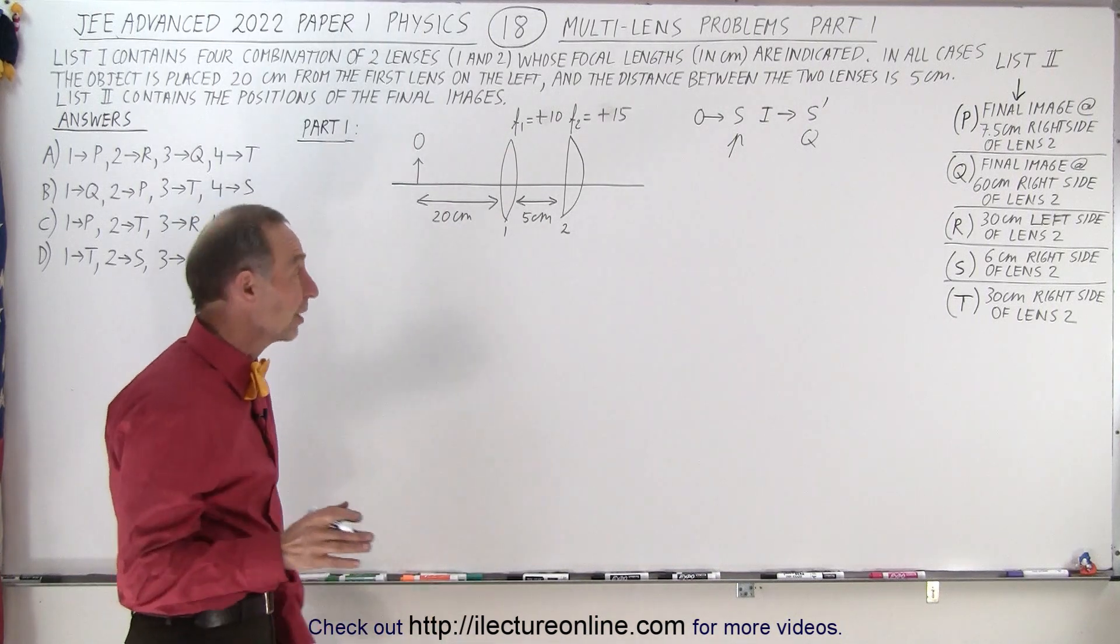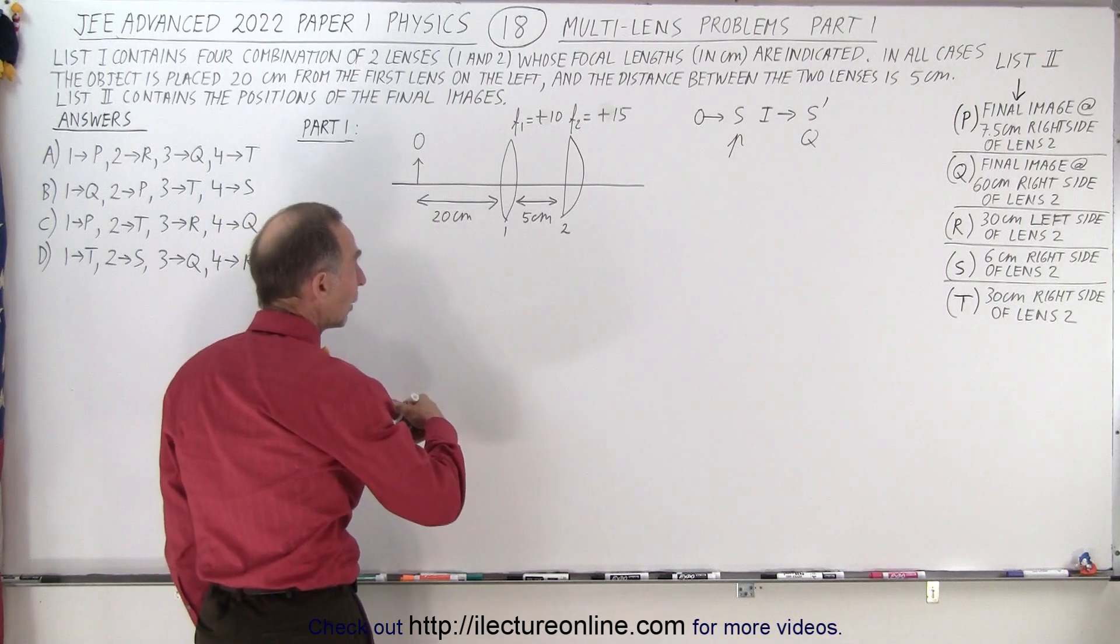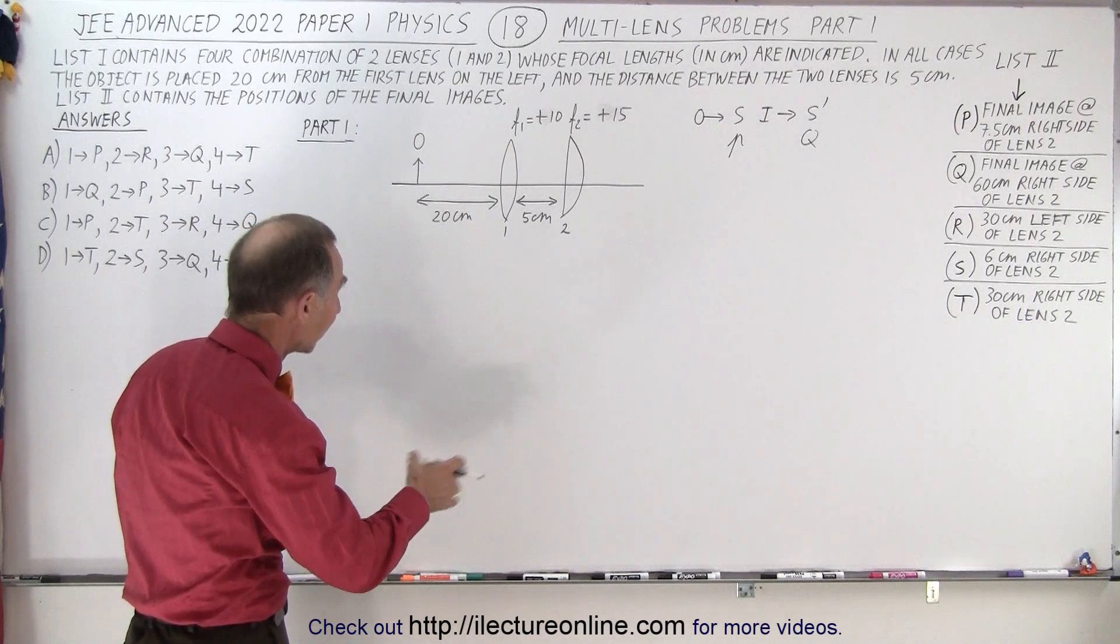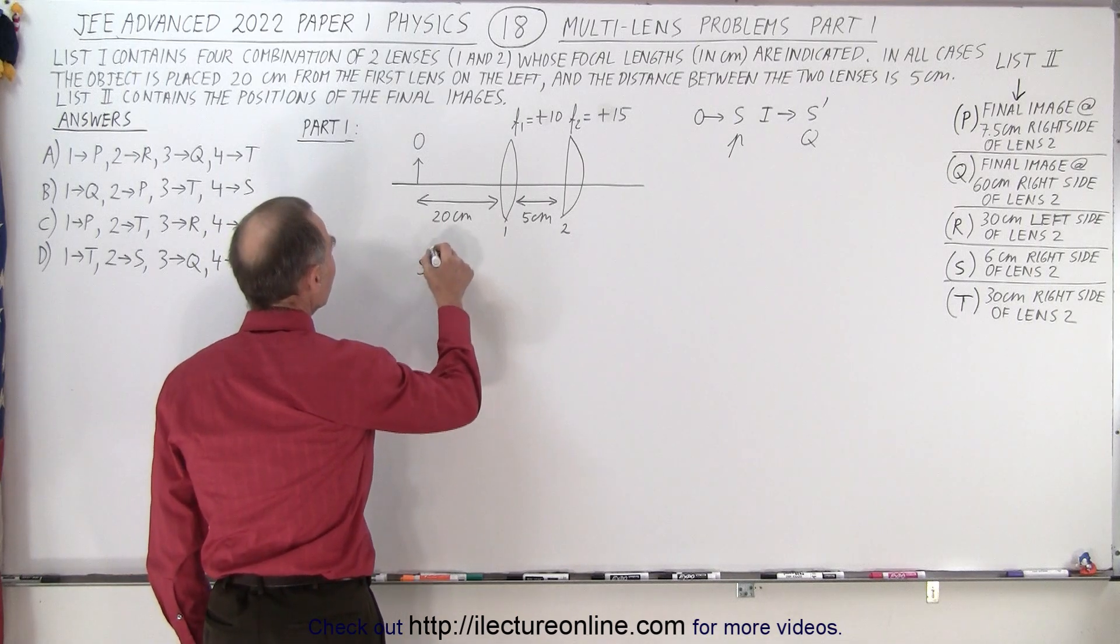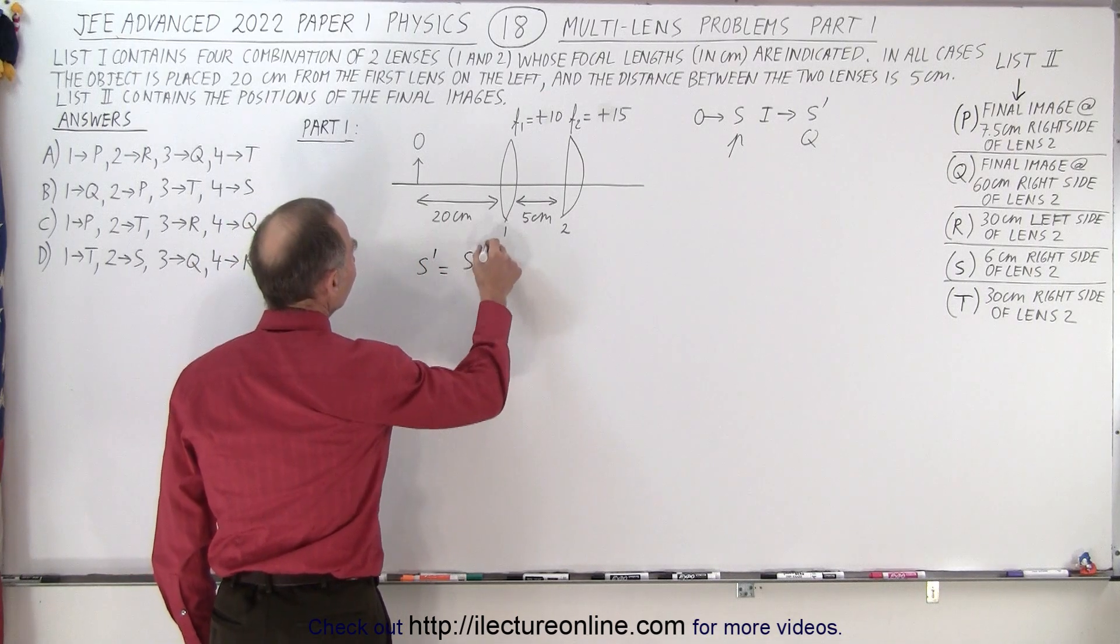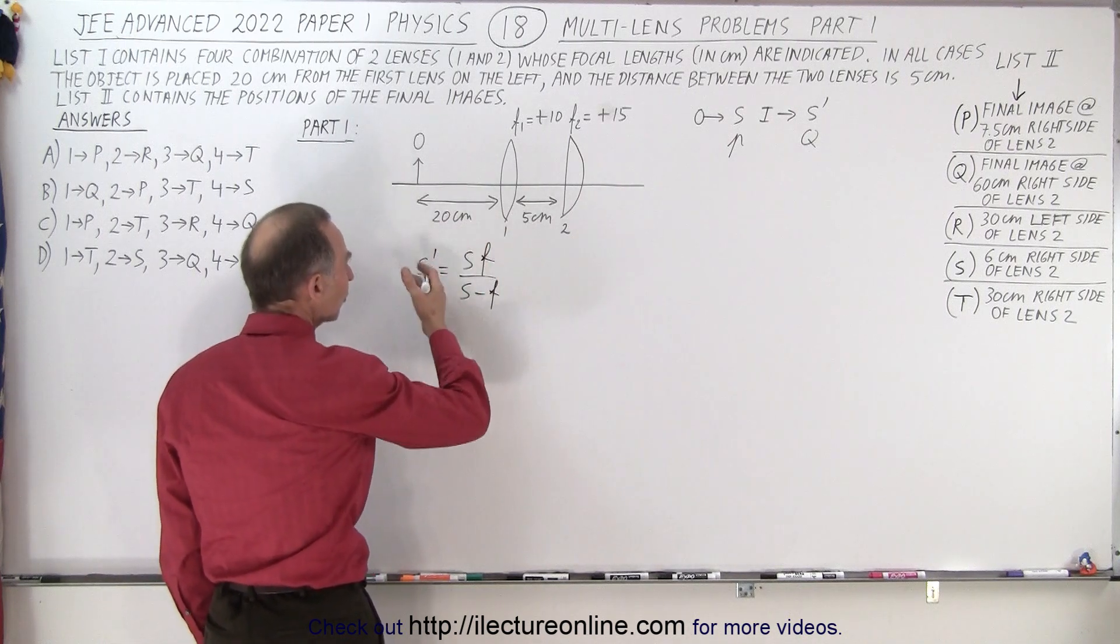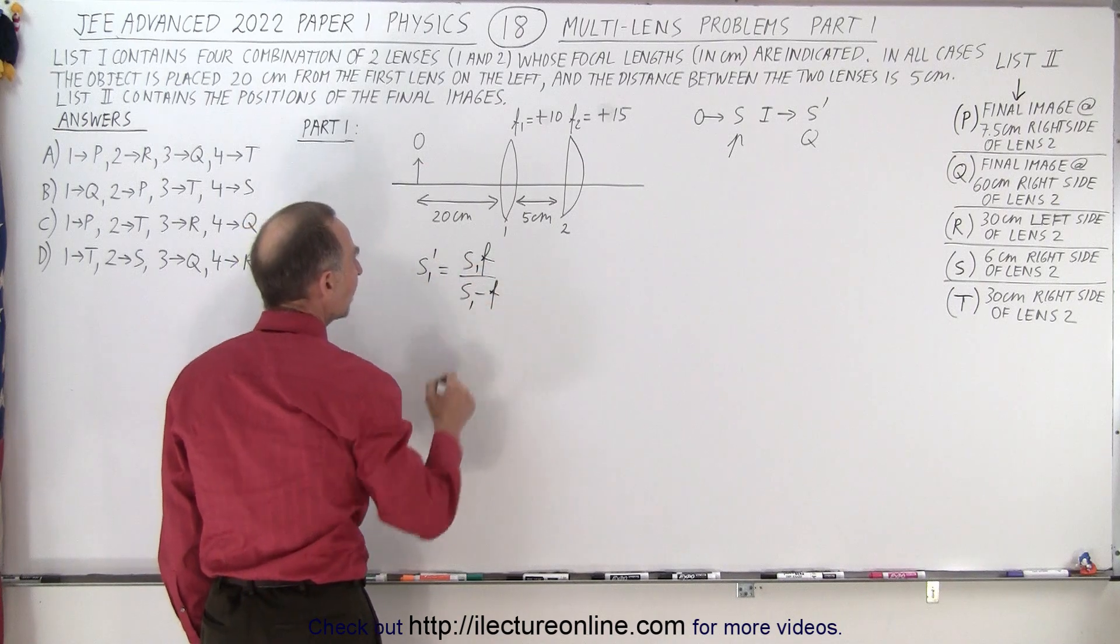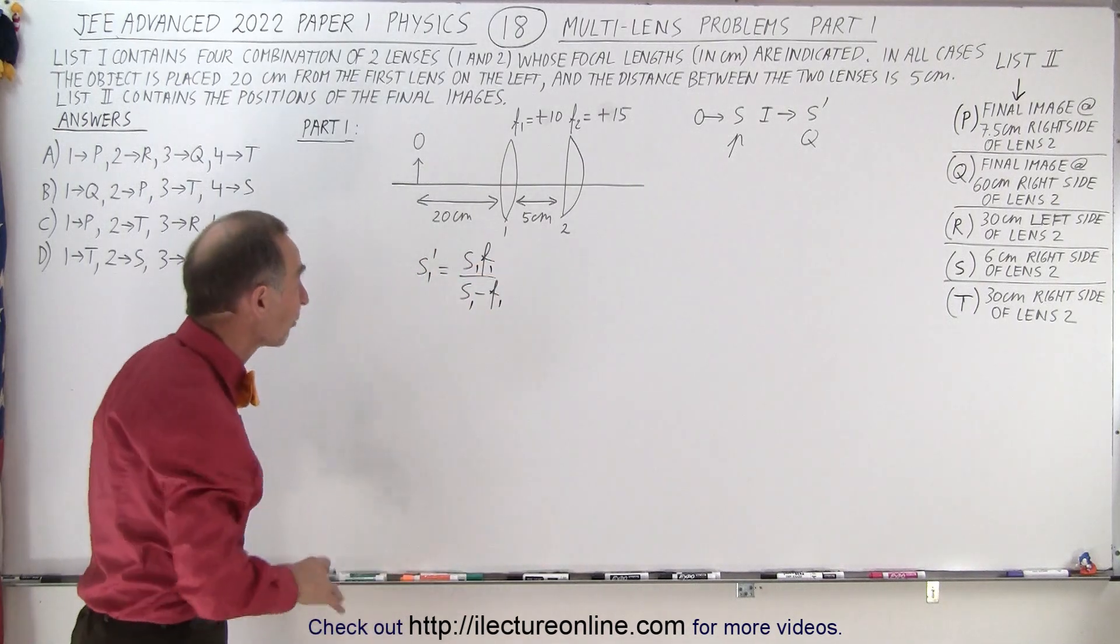So what we're going to do first is we're going to find the position of the first image. And then we'll find the object distance of the second lens. And then we'll find the position of the second image. So we can say that S prime is equal to S F over S minus F. And I'm going to put sub one there because we're dealing with the first image and the first lens.